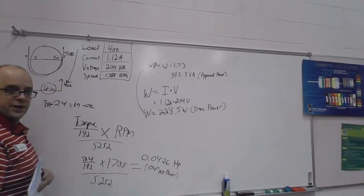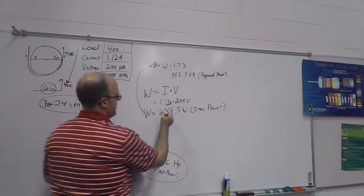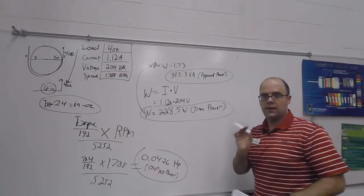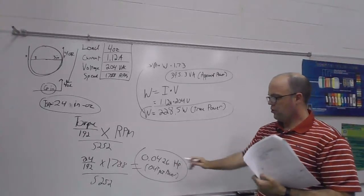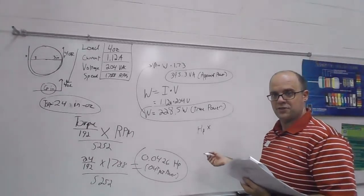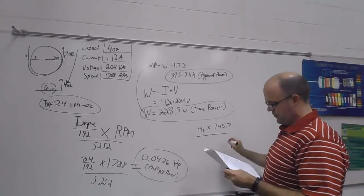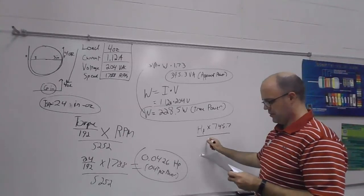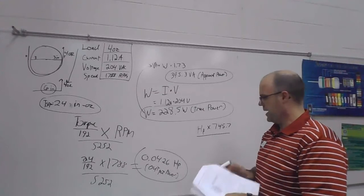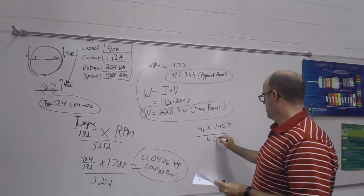Are you tracking with me so far? So we have my output power here. We have my torque here. So we have my torque, we have my output power, we have my true power, we have my apparent power. So the last thing we need is our efficiency. And that will be the horsepower, your horsepower times a conversion factor to turn this into watts, which that number is 745.7 divided by your true power. Make sure. Yeah, your true power. So in here, your true power, your watts, what you calculated right here. True power.